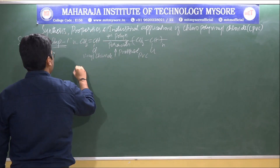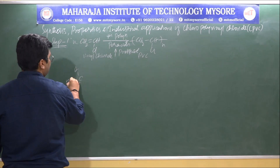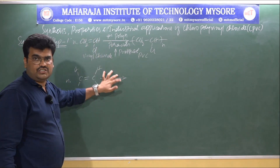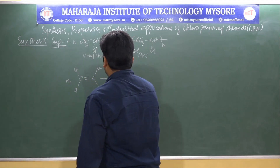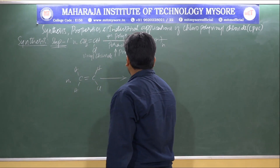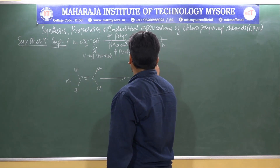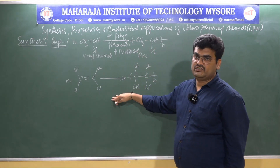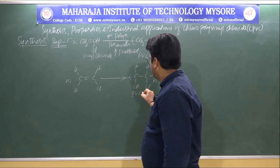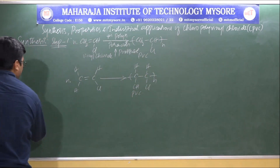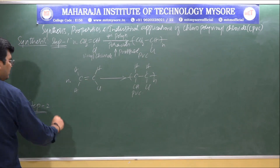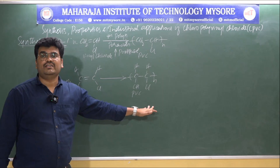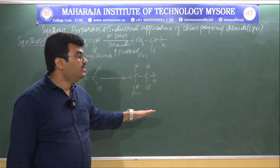The same reaction can also be written in another form: n moles of CH2=CHCl under the same addition polymerization conditions gives polyvinyl chloride, which can be represented as —CH2–CHCl—n. This structure will be used in step two for chlorination.